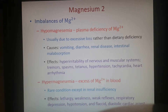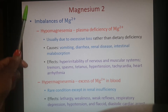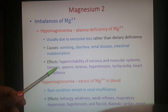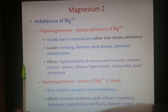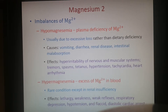The opposite case is hypermagnesemia — too much magnesium — which is very rare unless your kidneys are malfunctioning. In those cases you end up being lethargic, very weak, with weak reflexes, since it has the opposite effect from hypomagnesemia. The nervous and muscular systems are less hyper-irritable, and you also see respiratory depression, hypotension, and flaccid diastolic cardiac arrest.